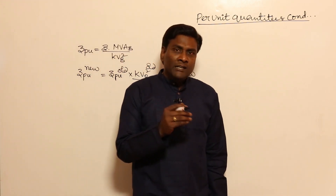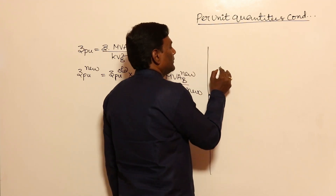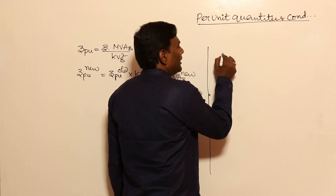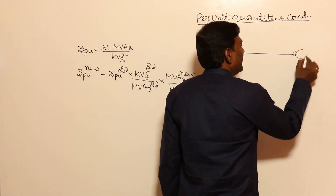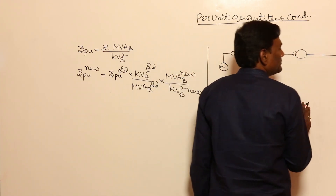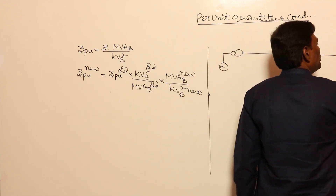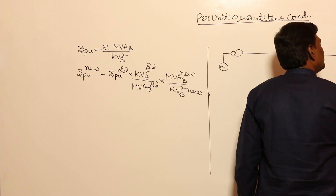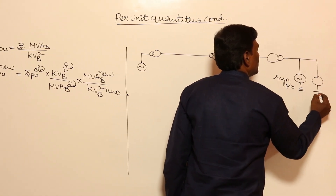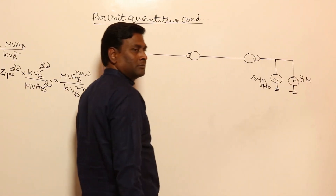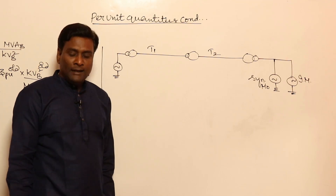Let us think of a single line diagram. In our previous video we discussed how to draw one. For example, if I have a generator, then immediately a transformer LV to HV, after that a transmission line, then another step-up transformer, then another transmission line, then a step-down transformer, and finally a load — one synchronous motor and one induction motor. This is transmission line 1 and transmission line 2.